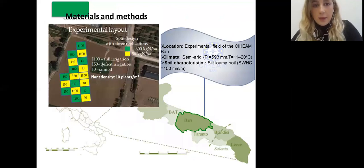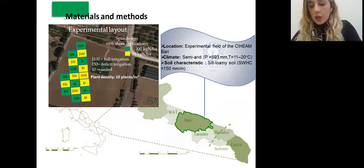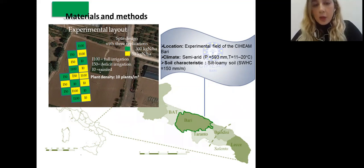Here, you can see the experimental layout. Experiment was located in the experimental field of Siam Bari, characterized by semi-arid climate, and silty loamy soil. Plots, they were in split design. Each treatment was replicated three times. We had different nitrogen levels, low nitrogen and very high nitrogen level, 300 kilograms of nitrogen per hectare, and three different water regimes: full irrigation, deficit irrigation, where half of full requirement of crops was applied, and rain-fed crops, with plant density of 10 plants per meter square. Plot size was 10 by 10 meter, and in total, we had 18 plots.